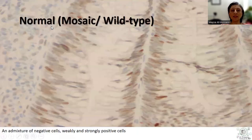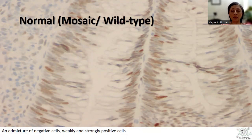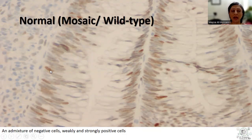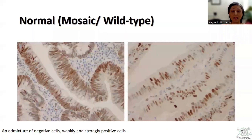This is the normal staining pattern or the wild-type, sometimes referred to as the mosaic staining pattern, in which we see variability of the staining in terms of the percentage of staining cells as well as the intensity of the staining with P53 immunohistochemistry. We have some tumor cells which are negative, others which are positive, and those that are positive show variable intensity — weak, intermediate, and more intense or strong staining. This is the mosaic or wild-type staining pattern, equivalent to normal staining pattern in most instances.